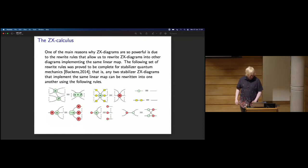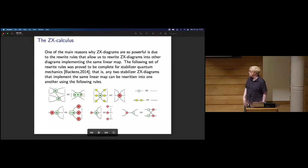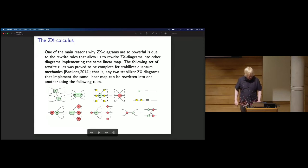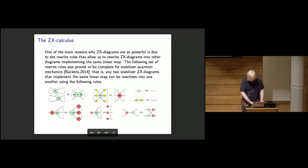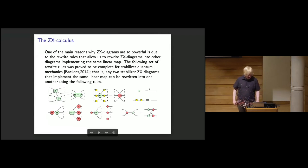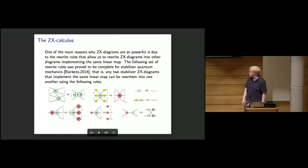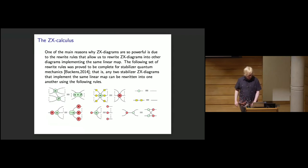The rewrite rules include: fusing two spiders of the same color and adding their phases; a Hadamard gate on each leg of a spider changes its color; a two-arity spider with no phase is the identity; two Hadamard gates cancel each other out; and the pi-copy and bialgebra rules at the bottom. We won't be heavily using these last rules today — they're given for clarity.